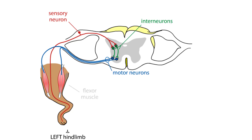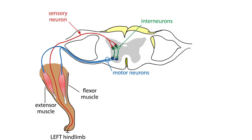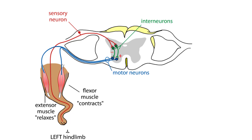Some motor neurons innervate flexor muscles, while others innervate the extensor muscles. Whether a particular motor neuron is excited or inhibited depends on the interneuron. In this example, an interneuron sends an inhibitory signal to the motor neuron controlling the extensor muscles, while another interneuron sends an excitatory signal to the motor neuron controlling the flexor muscles.